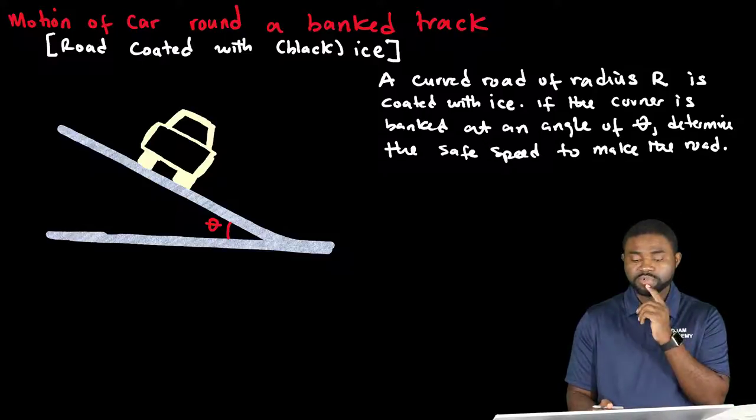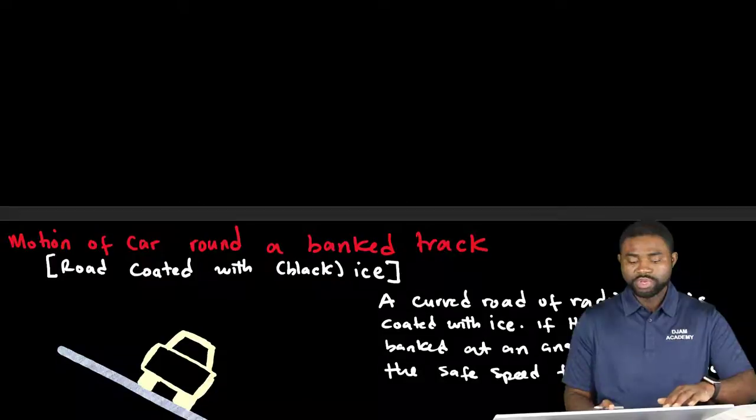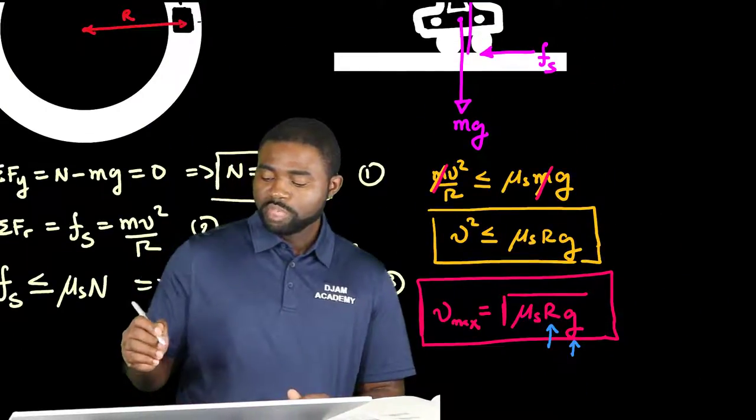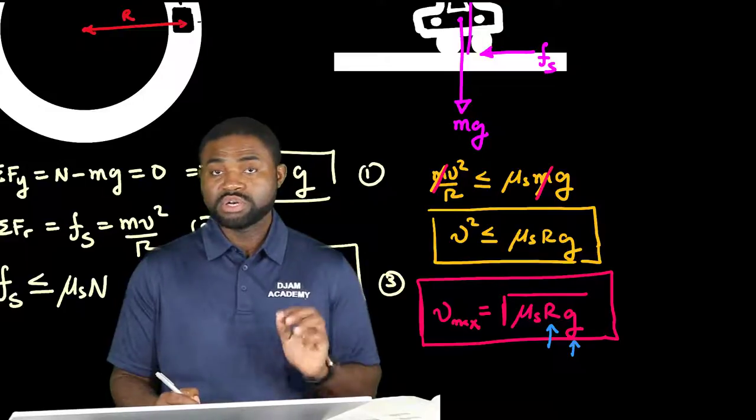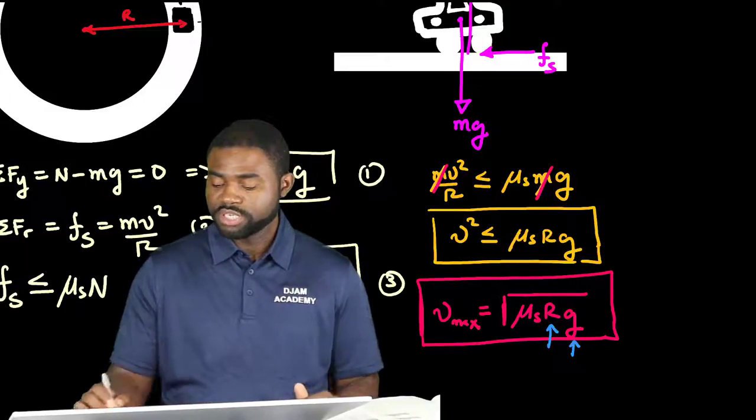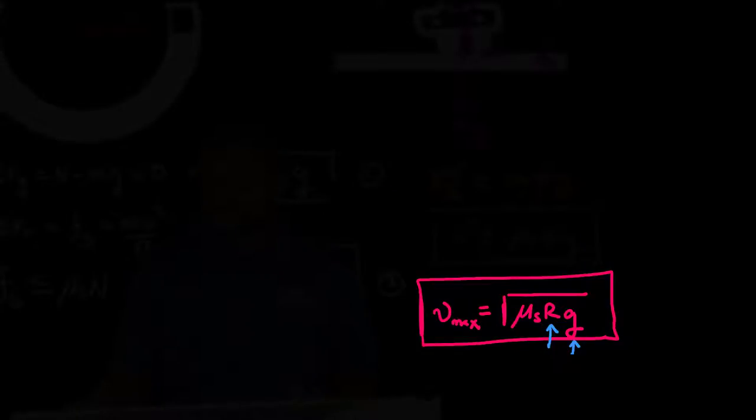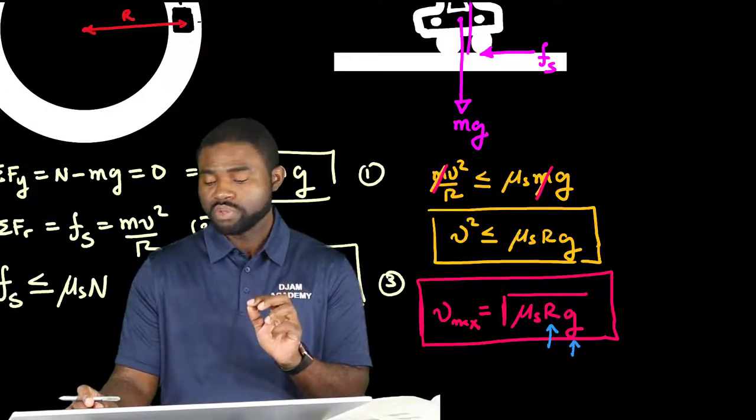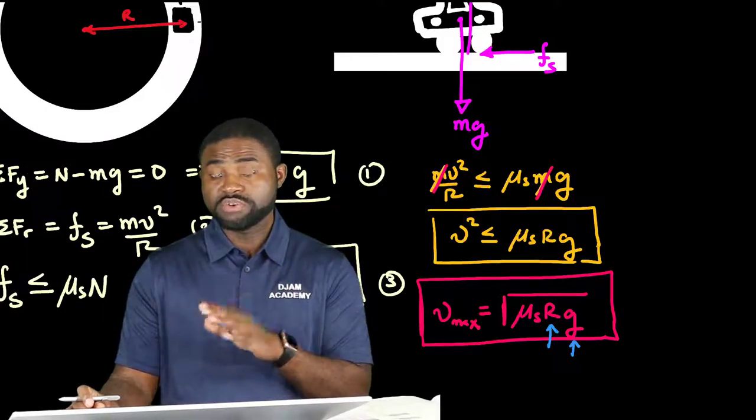Remember in the last example that we just studied, we found out that the maximum speed that a car can have around an unbanked road is given by the square root of μs R g. In other words, the maximum speed only depends on the coefficient of static friction.